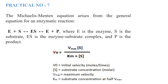The Michaelis-Menten equation is given as: V₀ = Vmax × [S] / (Km + [S]). Here V₀ is the initial velocity at time of reaction, [S] is the substrate concentration in moles per dm³, Vmax is the maximum velocity, and Km is the substrate concentration at half Vmax. When Vmax is halved, the substrate concentration at that point is called Km. This equation is fundamental for describing enzymatic reactions.